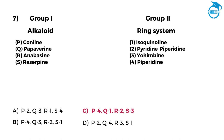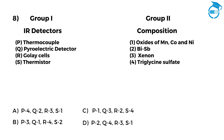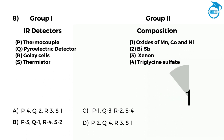You are participating really well in the test. Let us see if you can answer the next one. Group 1: IR Detectors. Group 2: Composition. P, Thermocouple — 1, Oxides of Mn, Co and Ni. Q, Pyroelectric Detector — 2, BiSb. R, Golay Cells — 3, Xenon. S, Thermistor — 4, Triglycine sulfate. Options: A: P4, Q2, R3, S1. B: P3, Q1, R4, S2. C: P1, Q3, R2, S4. D: P2, Q4, R3, S1. The right option is D, that is P2, Q4, R3, S1.